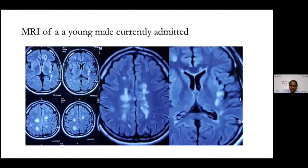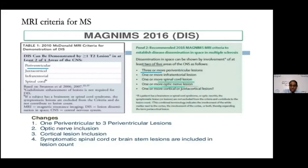A case of a young male patient currently in the ward is shown to demonstrate these changes. The MRI shows juxtacortical U-fiber lesions and periventricular callosal lesions. The MRI criteria used are Magnin's criteria, with some changes from the 2010 version, and these details assist in making a diagnosis using MRI.